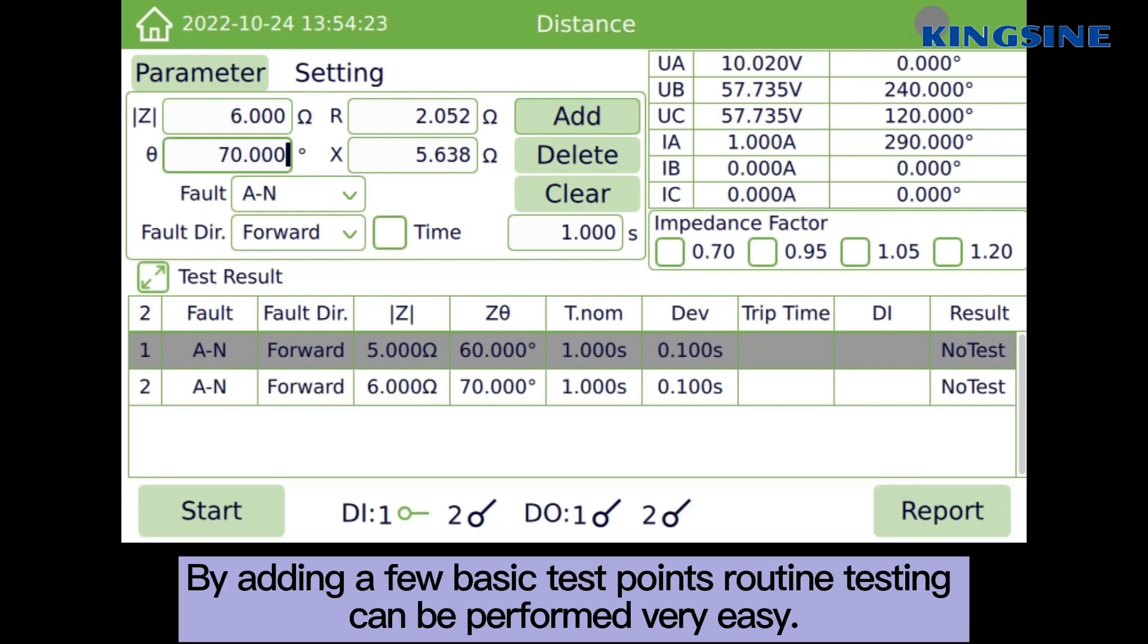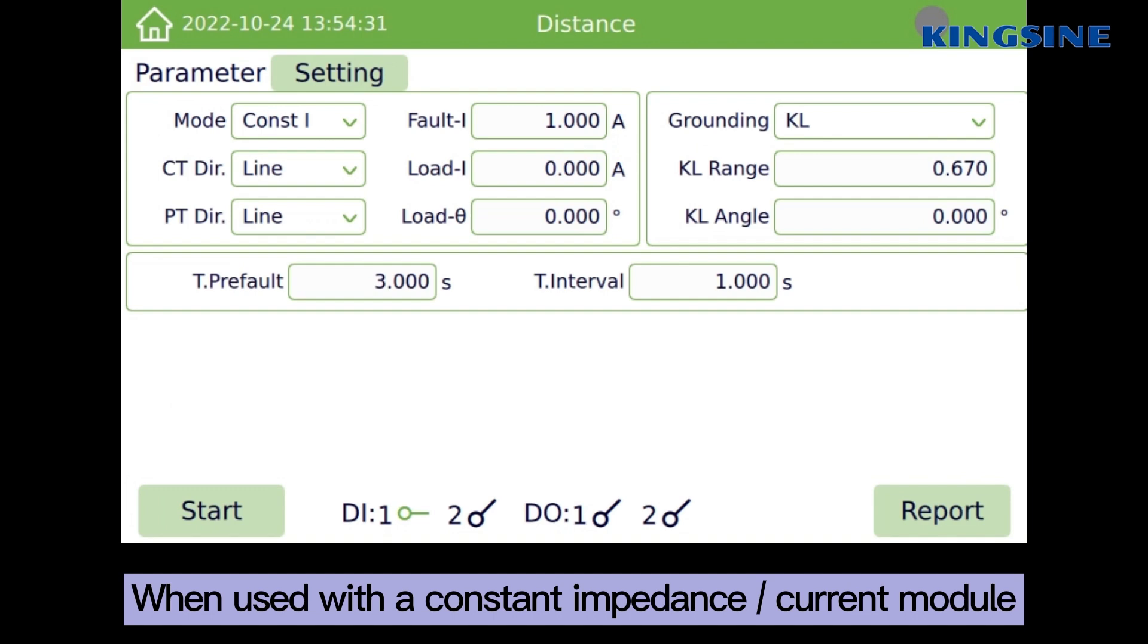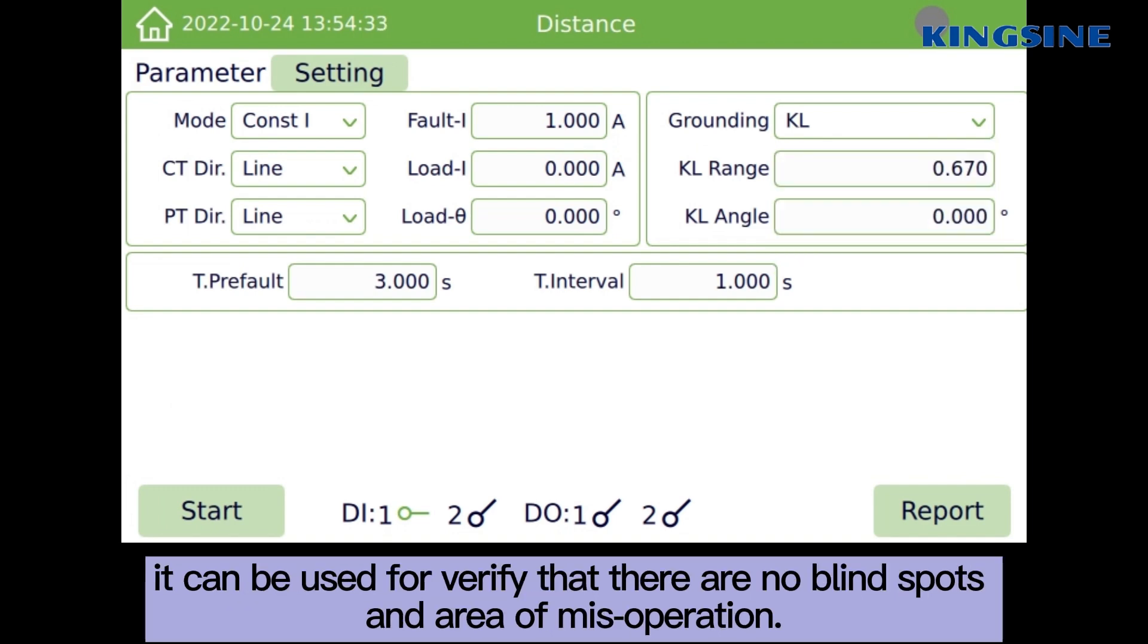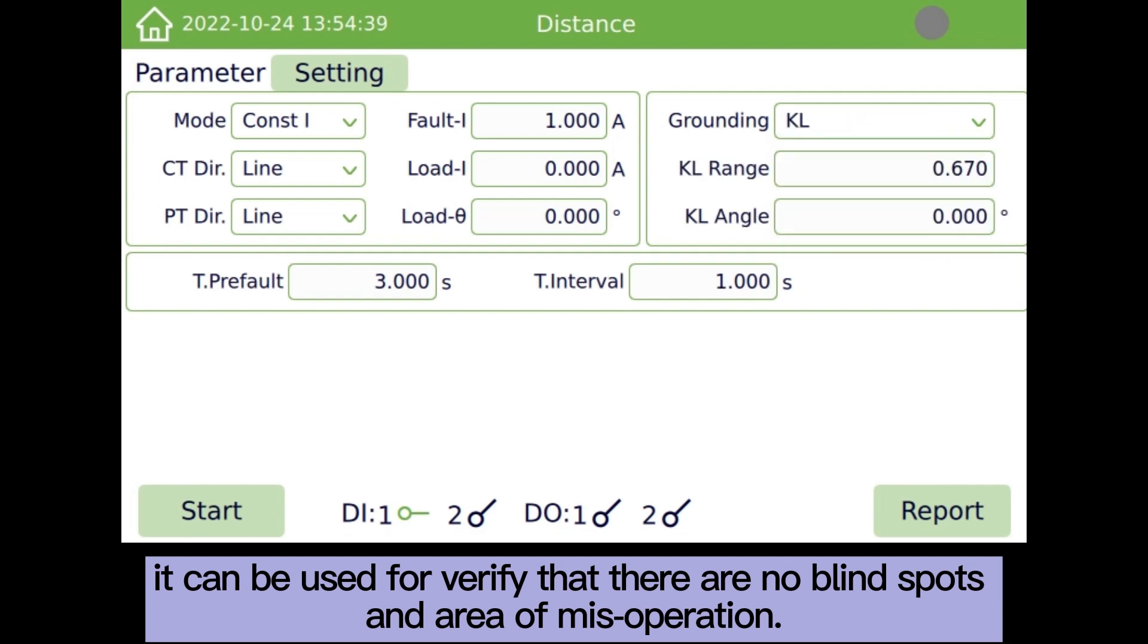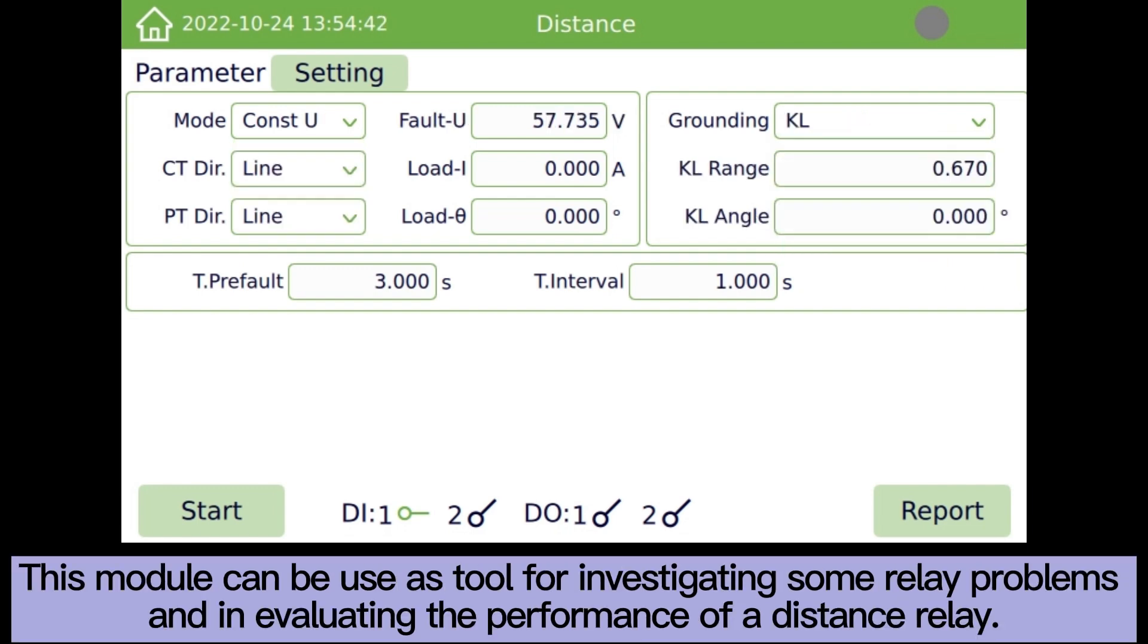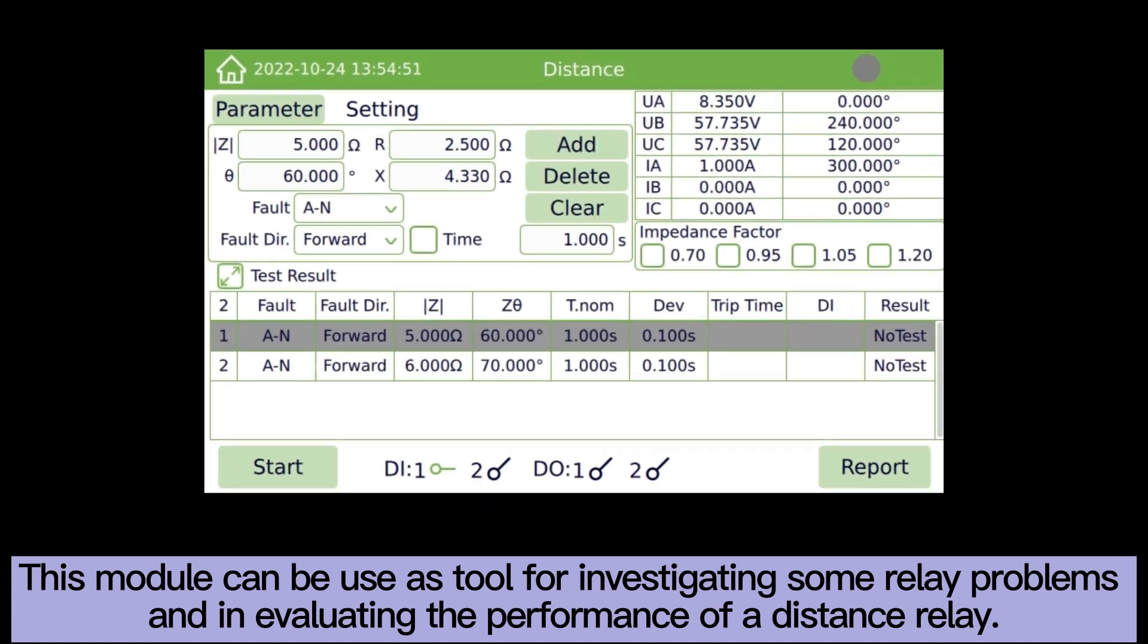By adding a few basic test points routine testing can be performed very easy. When used with the constant impedance current module, it can be used for verify that there are no blind spots, and area of misoperation. This module can be used as tool for investigating some relay problems, and in evaluating the performance of a distance relay.